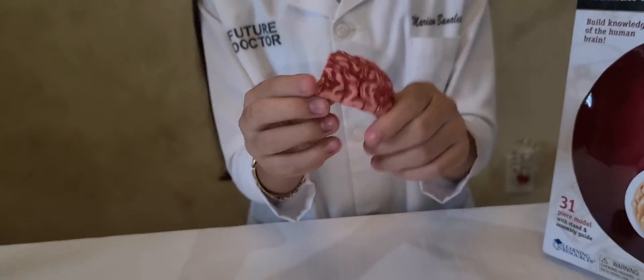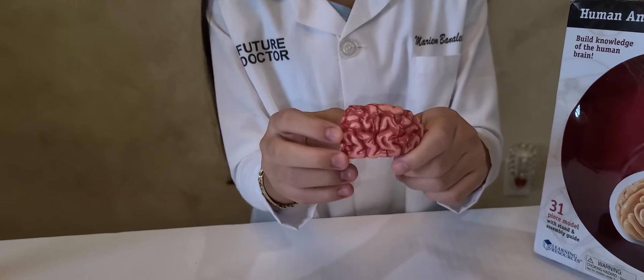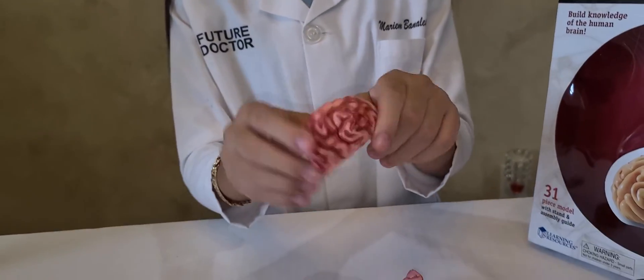The piece after that is called the occipital lobe and the occipital lobe controls visual perception which is the eyesight.